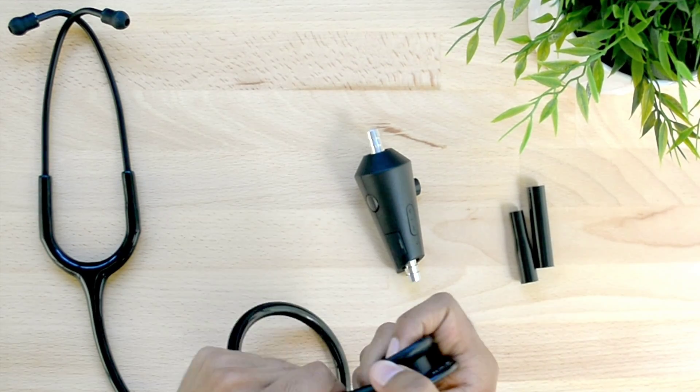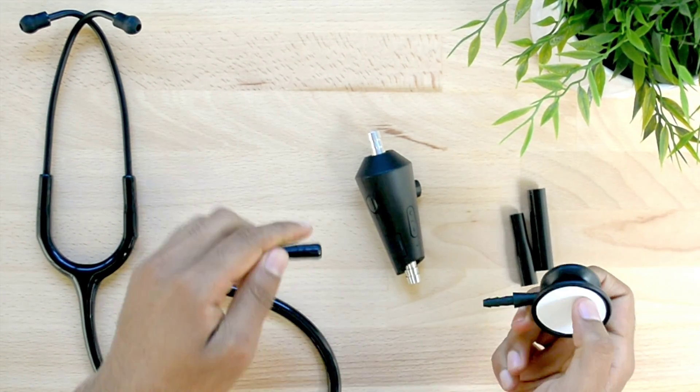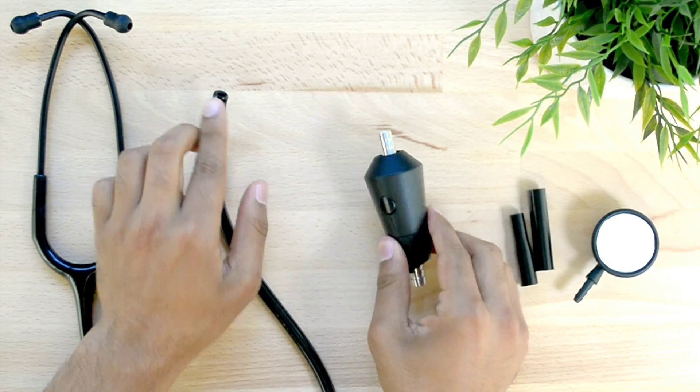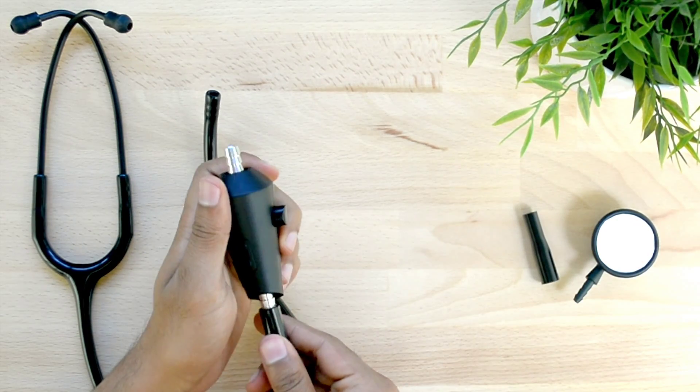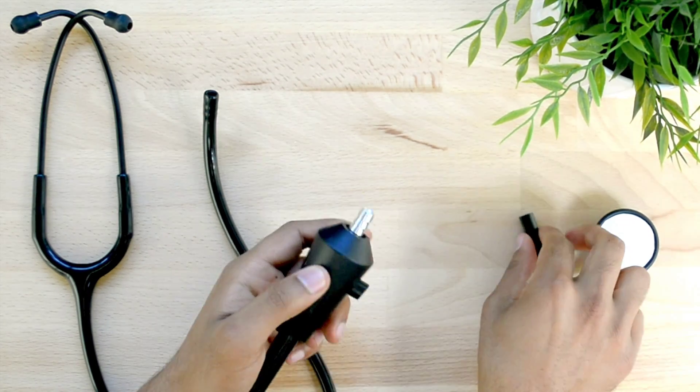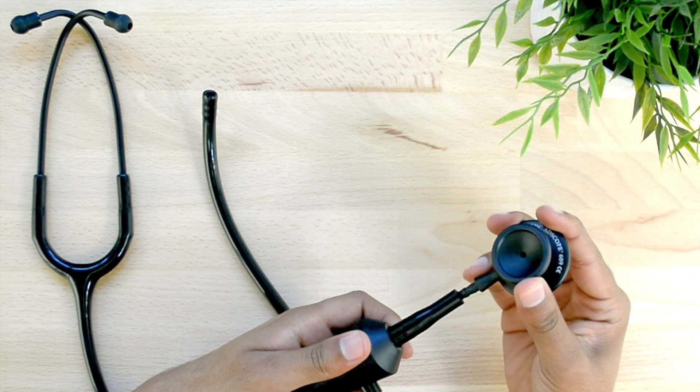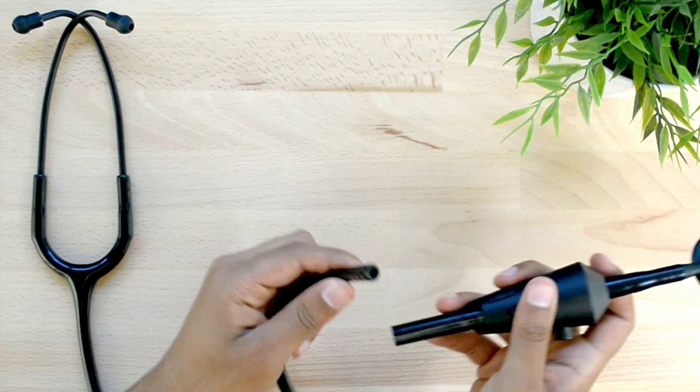First, remove the chest piece of the stethoscope. This may require some force. Then attach the large adapter to the bottom of the ECHO-Core and the small adapter to the top. Now press the chest piece into the small adapter and insert the stethoscope tubing into the large adapter.